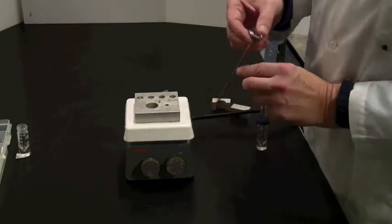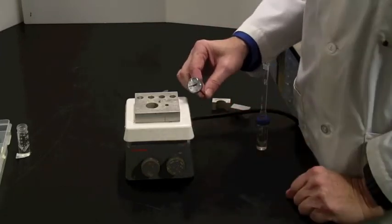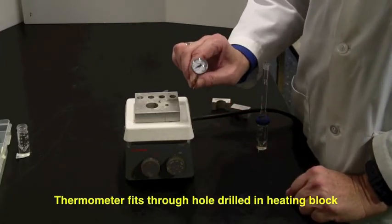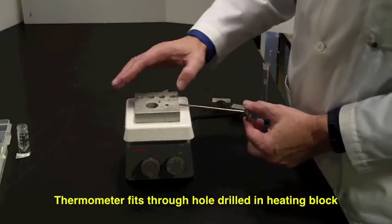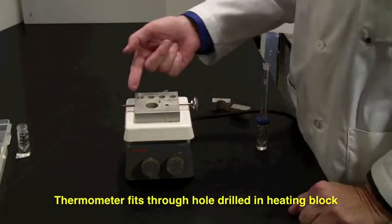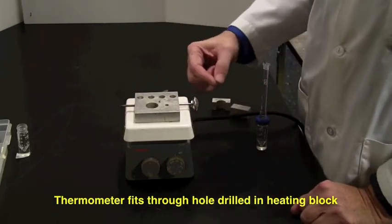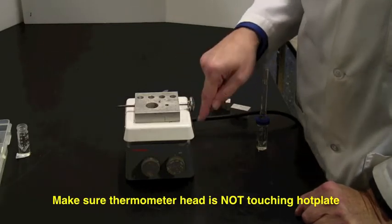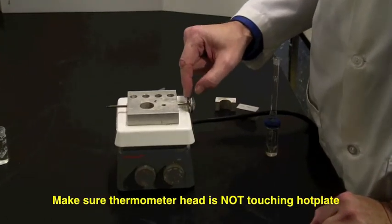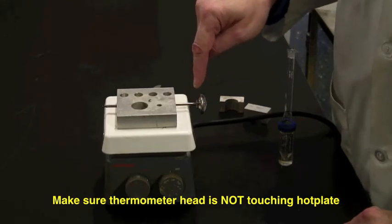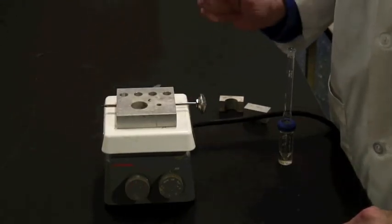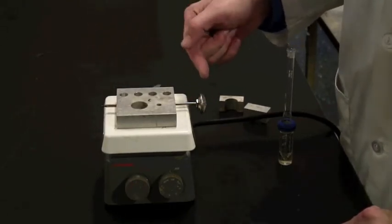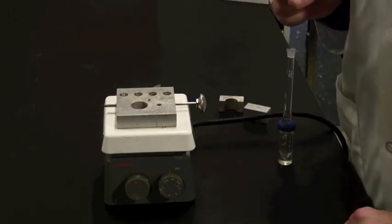In order to learn how well the hot plate is working, we have a thermometer here. It's calibrated in Celsius, and it sits inside the heating block like this. Make sure that you don't touch the head of the thermometer to the hot plate. You'll get a false reading if that's the case. Pull it out so that the only connection is through the metal bar. It looks like a meat thermometer. That's exactly what it is.